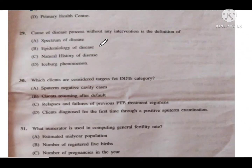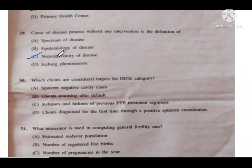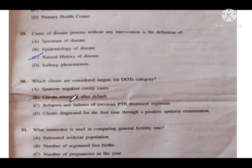Question number 29: The course of a disease process without any intervention is the definition of — option A is spectrum of disease, B is epidemiology of disease, C is natural history of disease, and D is iceberg phenomenon. Option C is the correct answer — natural history of disease.